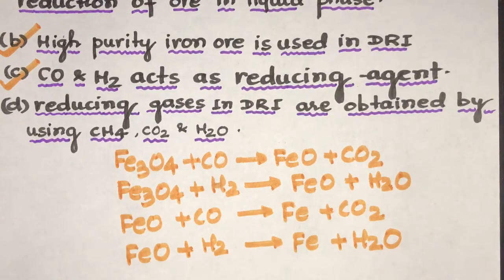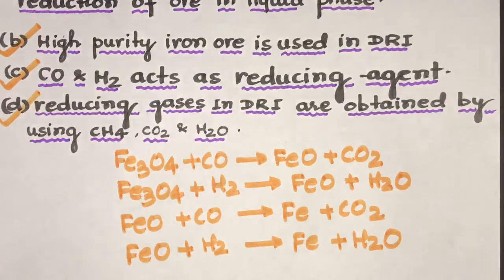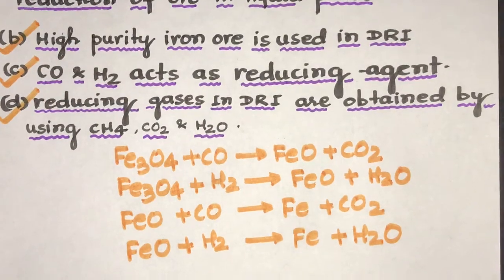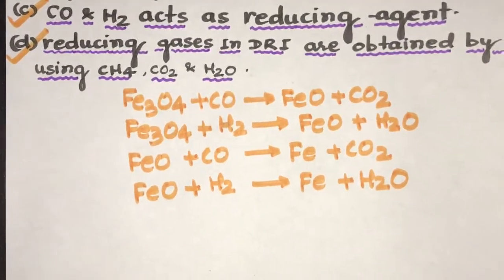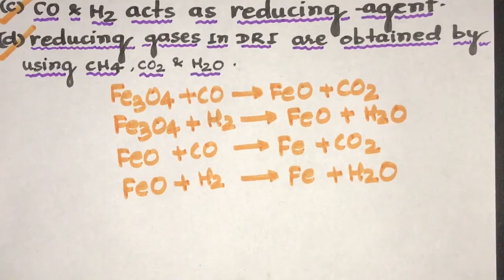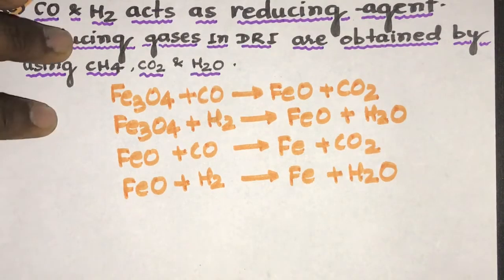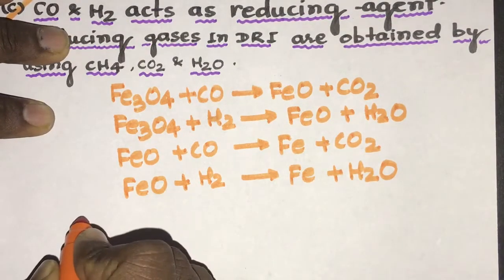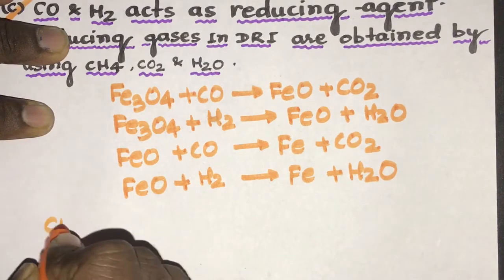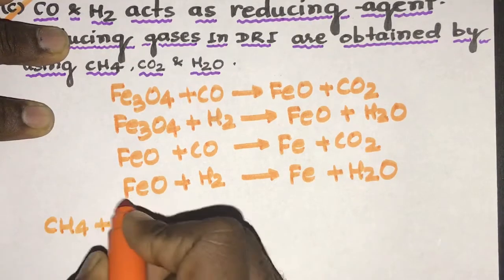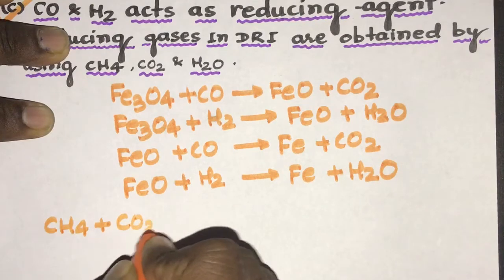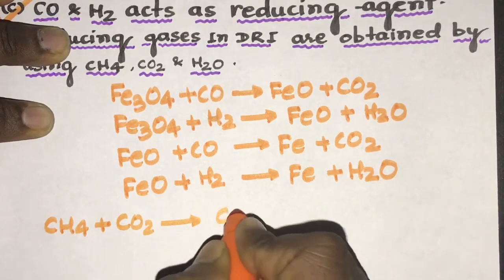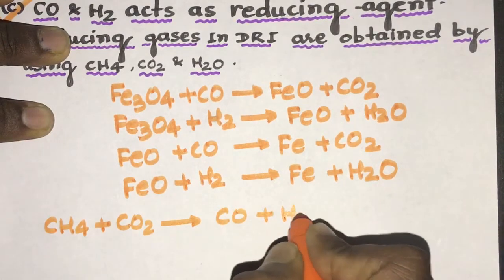Reducing gases in DRI are obtained by using methane, CO2 and H2O. This is absolutely correct. The reducing gases like CO and H2 are obtained by reforming methane with CO2 and water. And the reaction is this: CH4 react with CO2 gas and it forms CO as well as hydrogen gas.